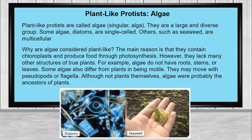Some protists are similar to plants in that they produce their own food through the process of photosynthesis, which is very different from the animal-like protists that have to obtain their energy from another source.